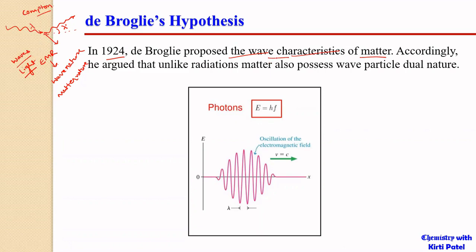De Broglie suggested the wave characteristics of matter. He argued that unlike radiation, matter also possesses wave-particle dual nature. Just as the Compton effect proved the wave-particle dual nature of waves, de Broglie suggested that matter is also possessing wave-particle dual nature.